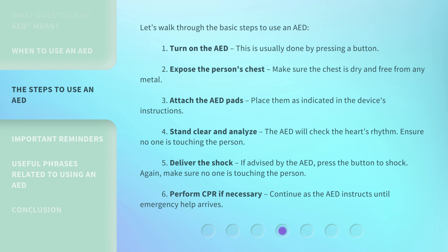Step 4: Stand clear and analyze — the AED will check the heart's rhythm; ensure no one is touching the person. Step 5: Deliver the shock — if advised by the AED, press the button to shock; again, make sure no one is touching the person. Step 6: Perform CPR if necessary — continue as the AED instructs until emergency help arrives.